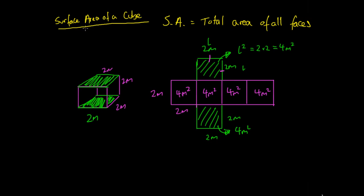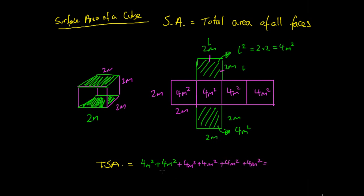The total surface area is the amount that all of the squares cover together. To get the total surface area, which I'll call TSA, we add up the areas of all six faces. For our 2 green squares — top and bottom — it's 4 metres squared times 2. For our 4 pink squares, it's also 4 metres squared each. So that's 6 times 4 metres squared. The total surface area is 4 + 4 + 4 + 4 + 4 + 4, which is 24 metres squared — the total surface area of a cube with a 2-metre side length.